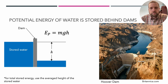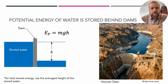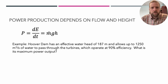Most hydropower systems take advantage of potential energy stored behind dams — this is a picture of Hoover Dam. The amount of energy is based on the height difference between the reservoir water and the downstream water, illustrated in the graphic as h, where potential energy equals mgh. One note: if you want to know total stored energy in the reservoir, you need to use the average height of the stored water, because as you use water the height goes down.